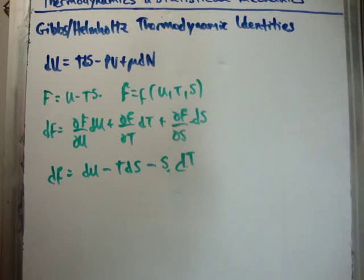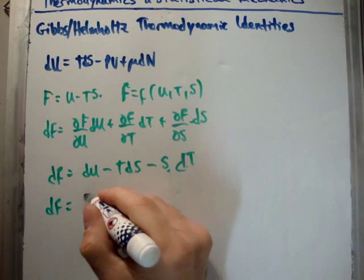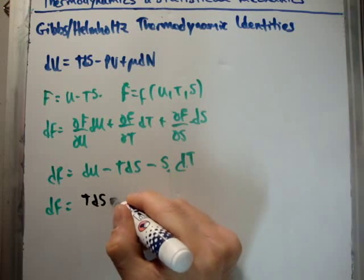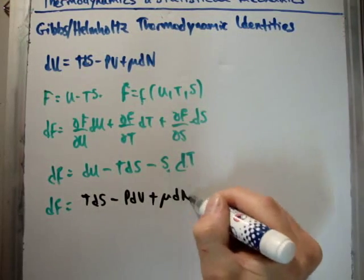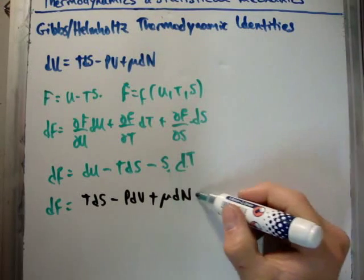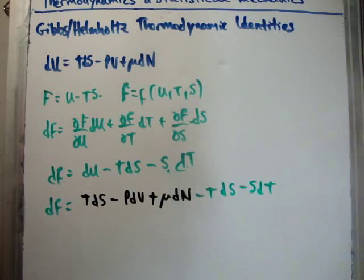So we're going to get that dF is going to be equal to TdS minus PdV plus μdN. And then we're going to have our two other terms of negative TdS minus SdT.